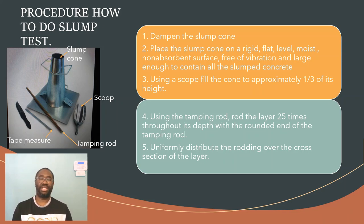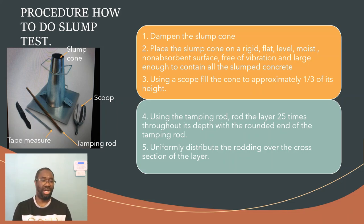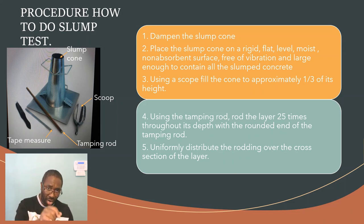Use the tamping rod to rod 25 times throughout the depth with the rounded end of the tamping rod. You will observe that one end of the tamping rod is smaller than the other — use the rounded, larger end. You must uniformly distribute the rodding over the cross-section of the layer, ensuring that you do not tamp only one section of the concrete inside the slump cone but rod all over the surface throughout that depth.